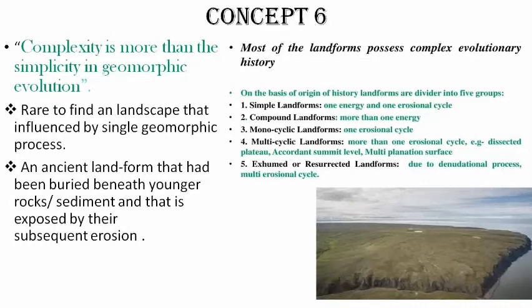Generally what we see is that more than one geomorphic process acts in an area. Maybe an area is the result of both volcanism and earthquakes. It is not that only one geomorphic process, only one earthquake, or only one geomorphic cycle has operated. Generally any area is the result of more than one geomorphic process.